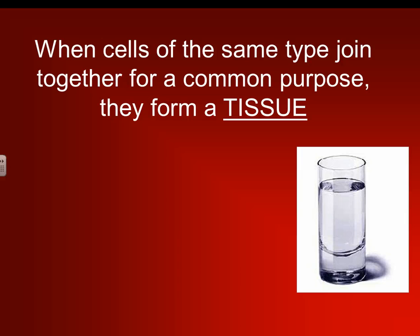So when cells of the same type join together for a common purpose, they form a tissue. Our body is made up of tons and tons of tissue. Tissues are 60 to 99% water. That's why it's very important to get at least six to eight glasses of water a day, because 60 to 90% of our tissue, which is basically the composition of our body, is composed of water.